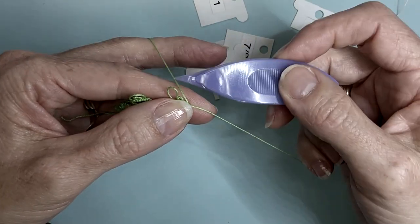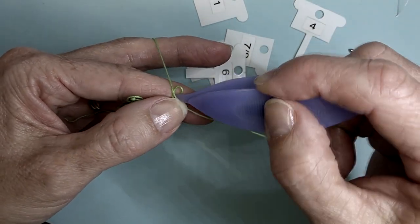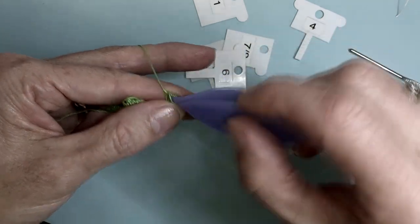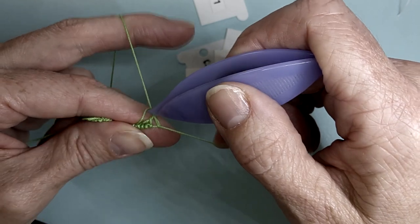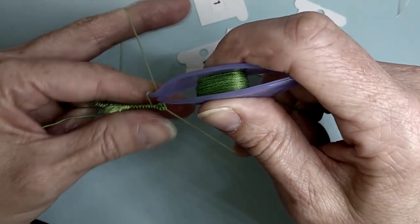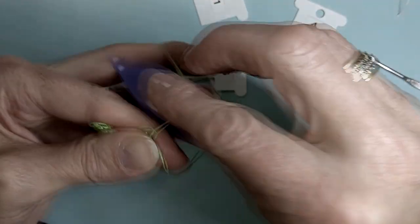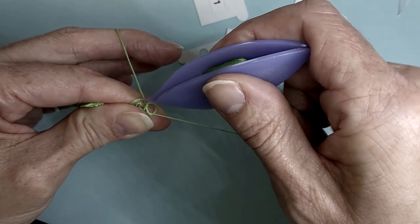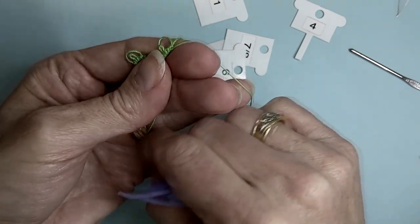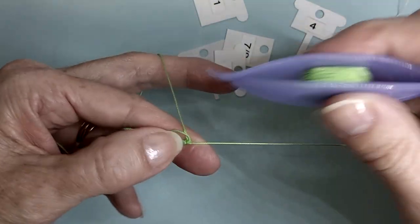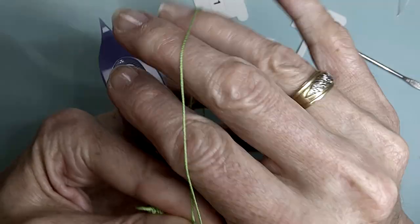We're joining back to our long picot, securing it with the second half of the double stitch, and continuing with six picot three.